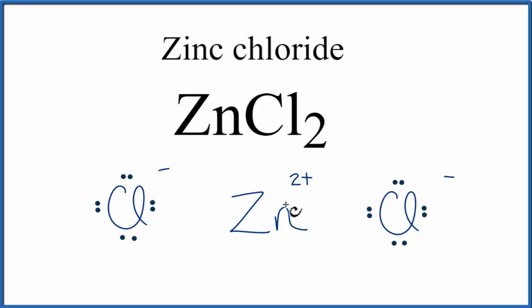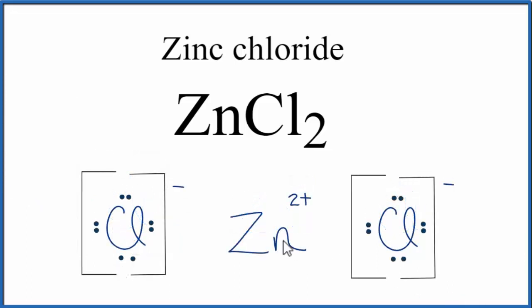And it's these positive and negative charges, they're attracted, opposites attract, that form this ionic bond in zinc chloride. We should write brackets around each of the chloride ions to show that they're ions. And you'll often see brackets placed around the metal, as well.